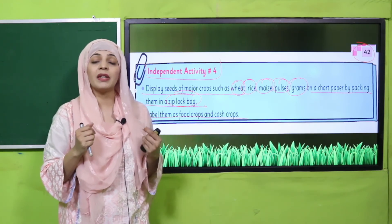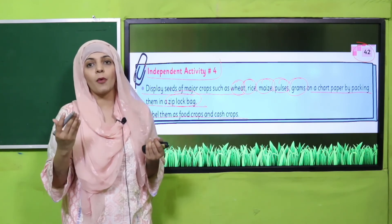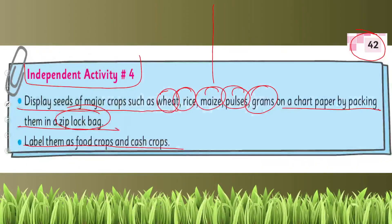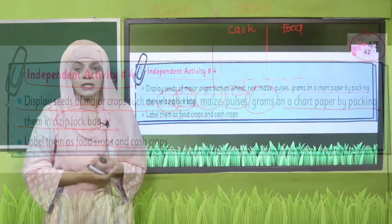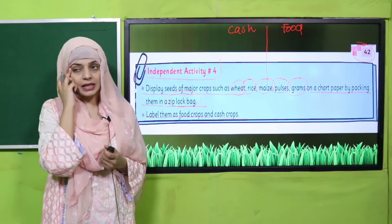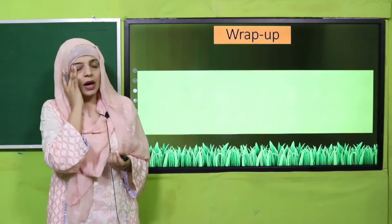Niche aapne naam bhi likhna hai — that this is a wheat crop — aur uske baad aapne yeh bhi batana hai ke is it a cash crop or a food crop. Aap is tariqe se column bana li jae gi: cash crops and food crops, aur uske niche apni desired crop paste karte jaani hai. So you will do this activity in your homework.